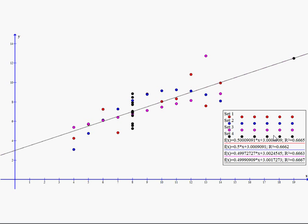So we've got four sets of data. They've all got the same mean. They've all got the same standard deviation or variance. They've all got the same line of best fit. But if you look at those four, the blue, the red, the pink and the black, they're all very, very different.